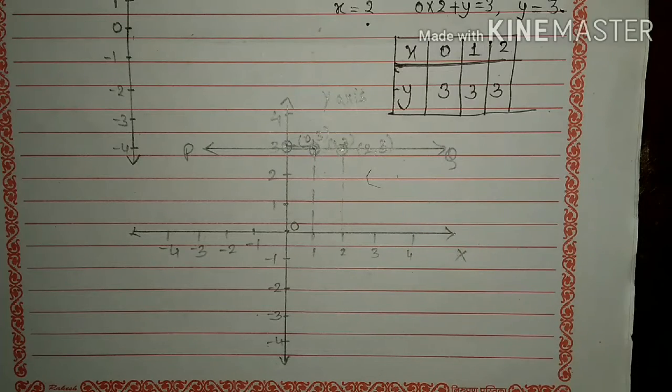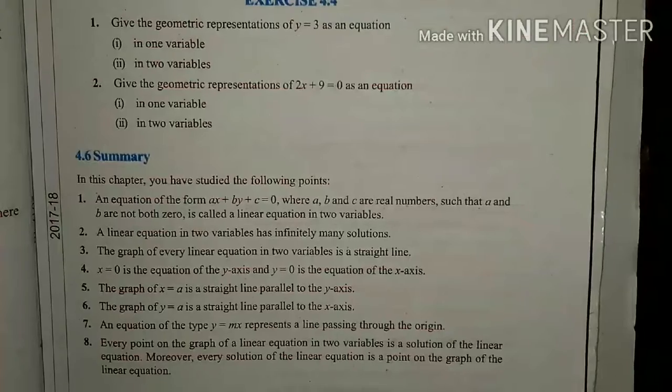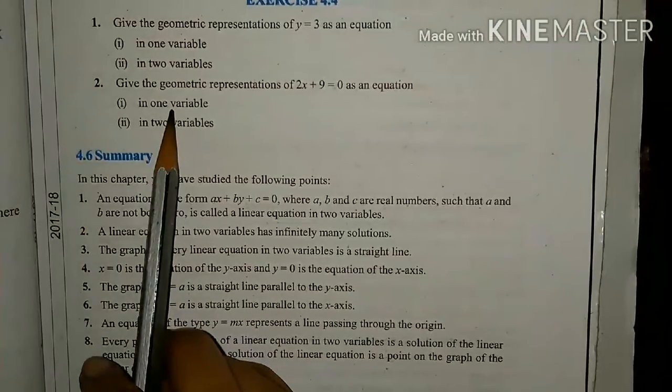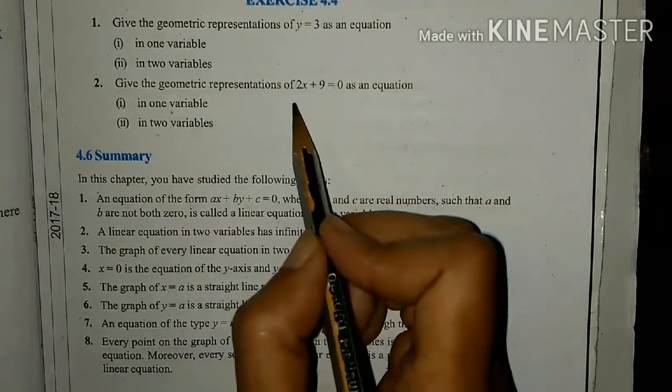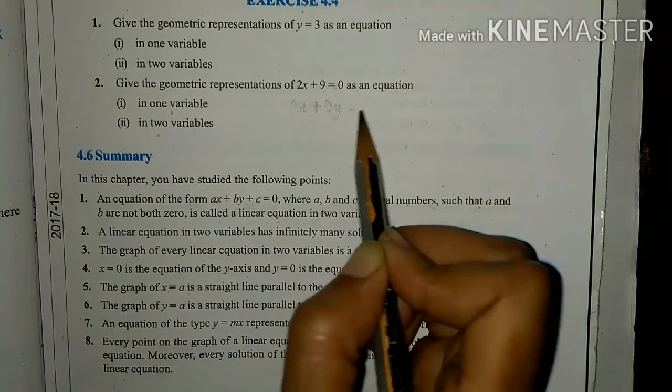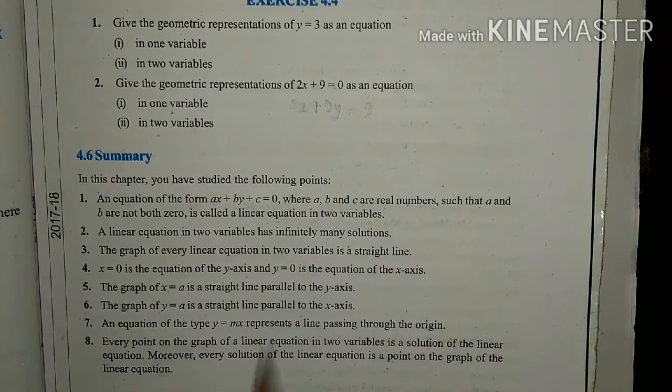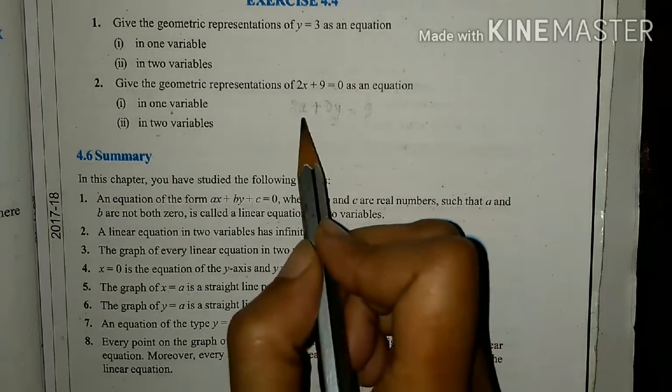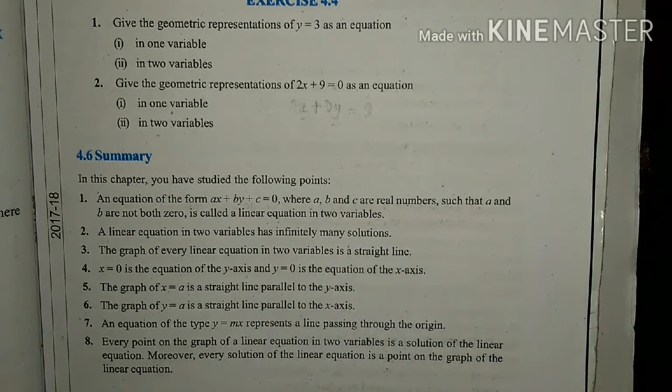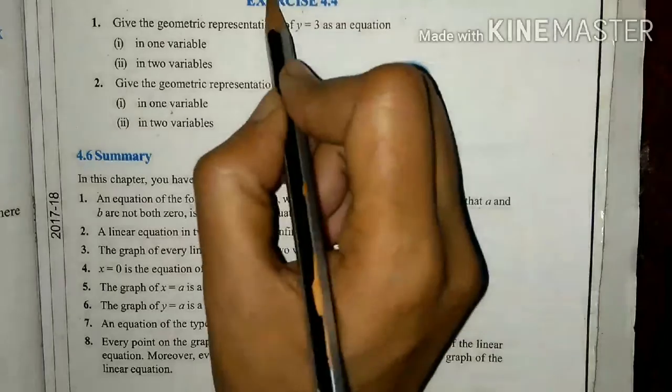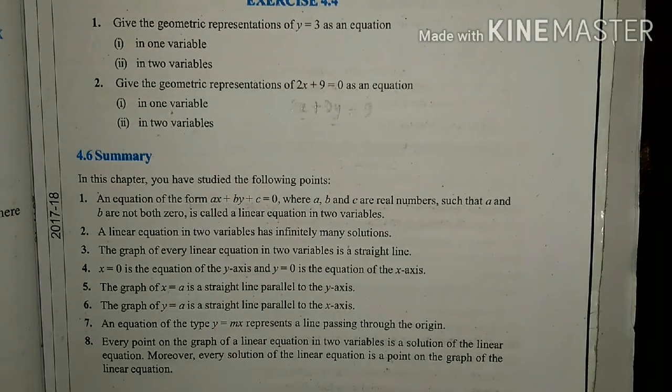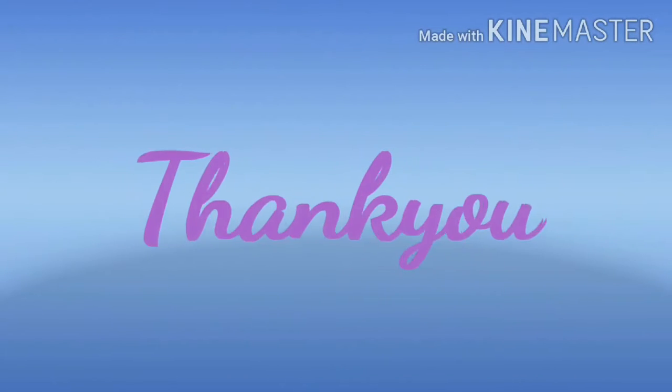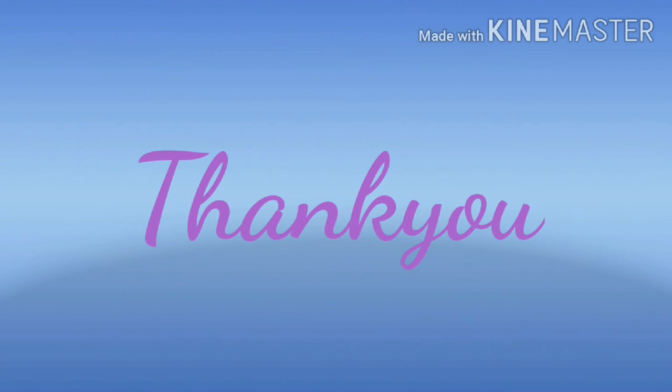Question number two, do by yourself, same thing. See, for one variable you can easily find the value, but for two variables your equation will be 2x + 0y = 9. And here if you put y value, then x value will come. So you will solve this and try it yourself.